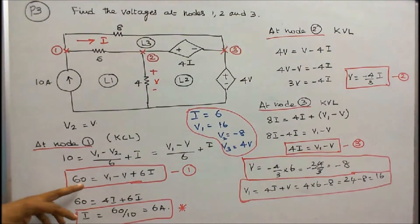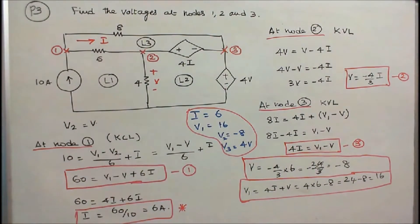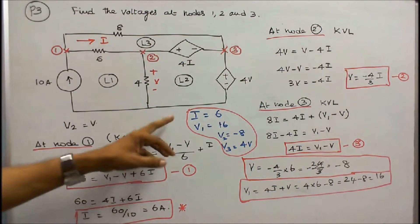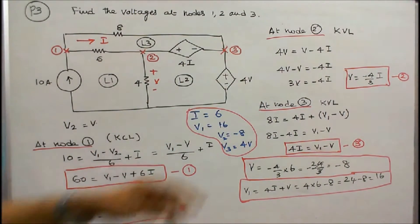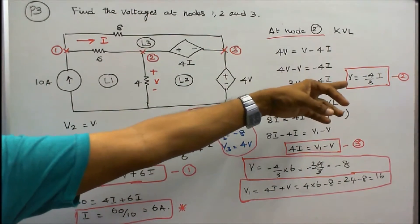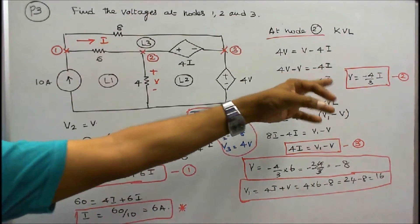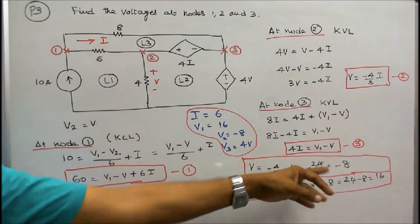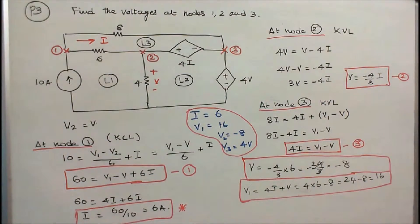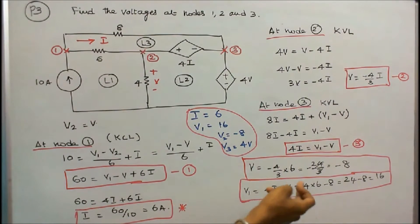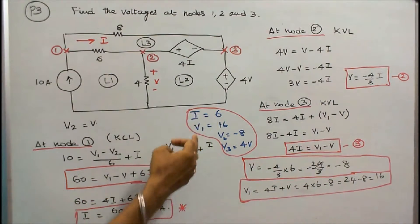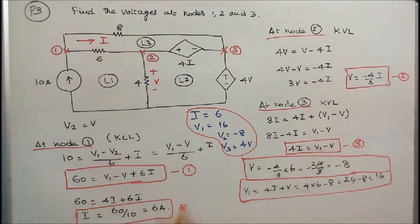In equation 1, 60 is equal to V1 minus V plus 6I. Substituting V1 minus V equal to 4I from equation 3: 60 is equal to 10I, so I is equal to 6 amps. Since V is equal to minus 4/3 into I and I equals 6, V equals minus 8 volts. V1 is equal to 4I plus V, that is 4 into 6 minus 8, equal to 16. So I is equal to 6, V1 is equal to 16 volts, V2 is equal to minus 8 volts, V3 is equal to 4 volts.